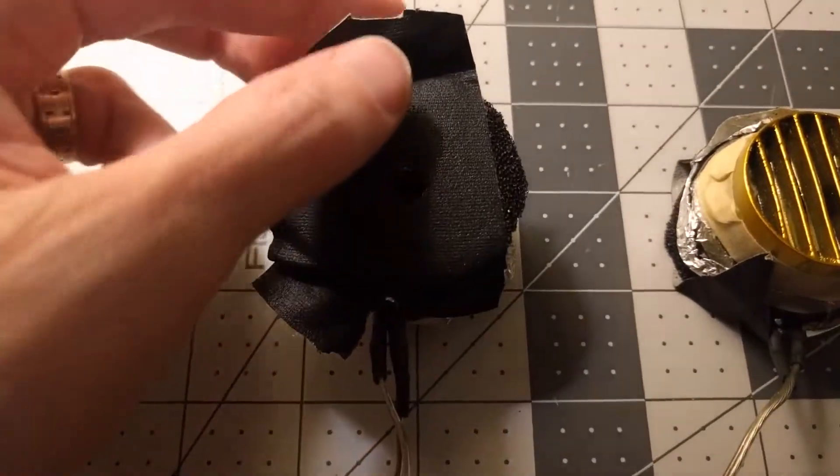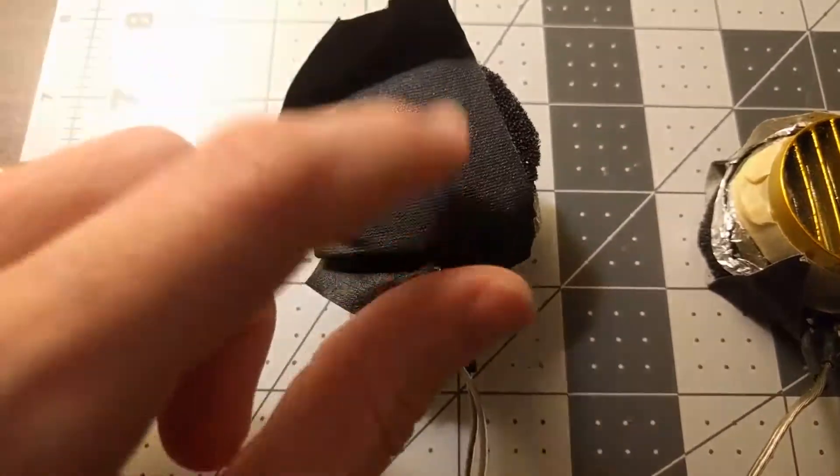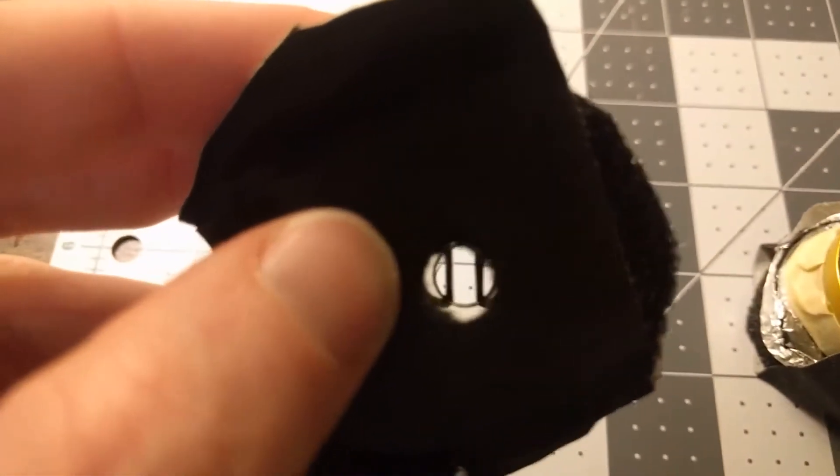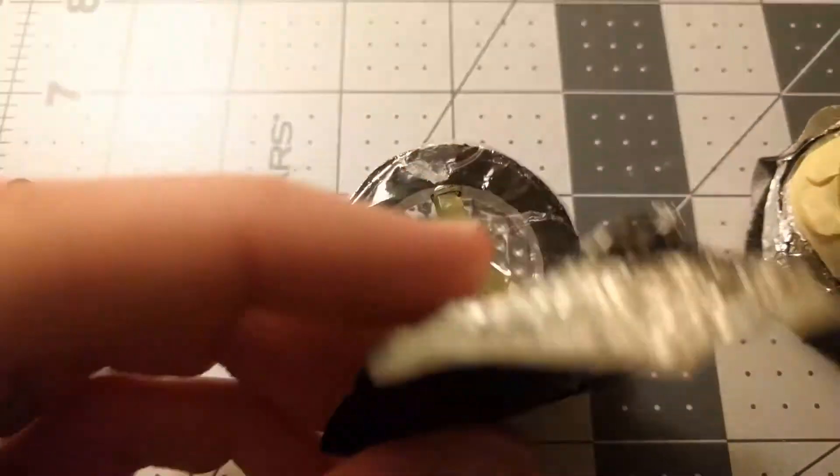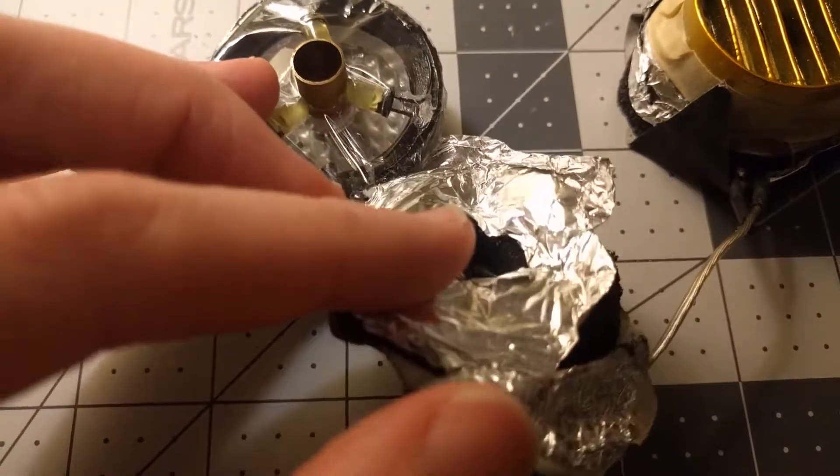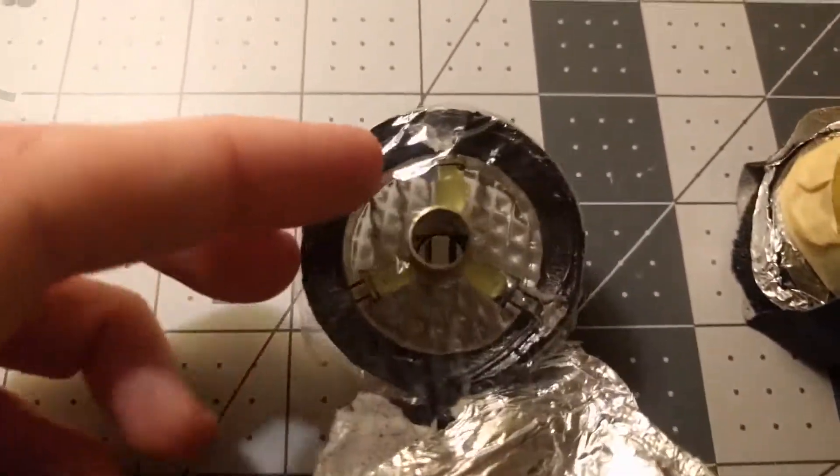So this is pretty ghetto. This is gaffer's tape that I poked a hole in. So you can see that's what you look through. Bad peripheral vision.